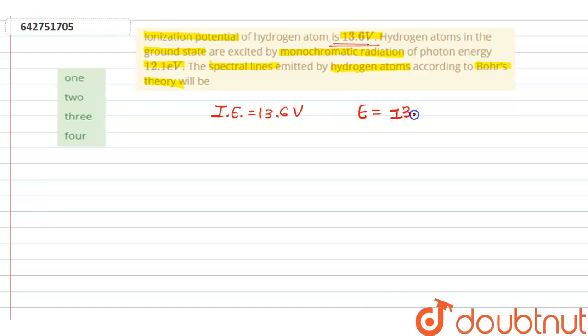Here, excited photon energy is given as 12.1 electron volts.